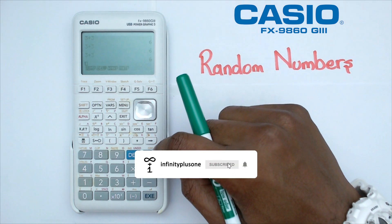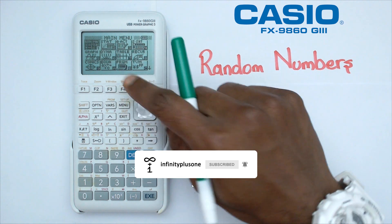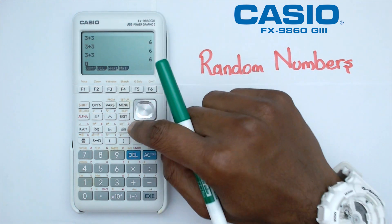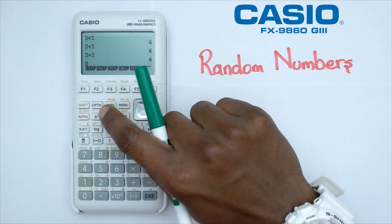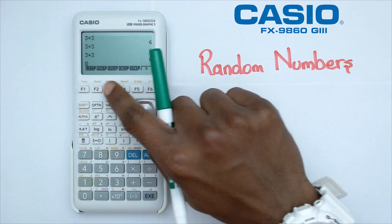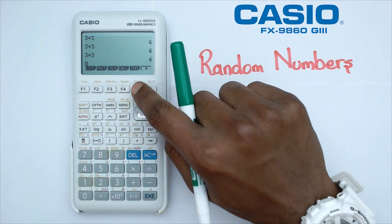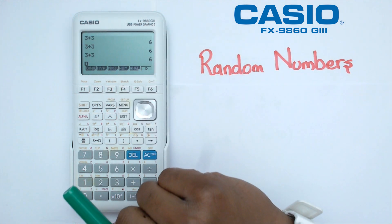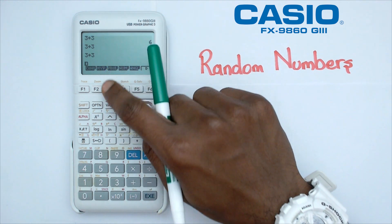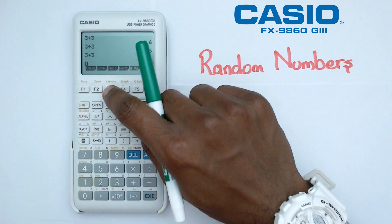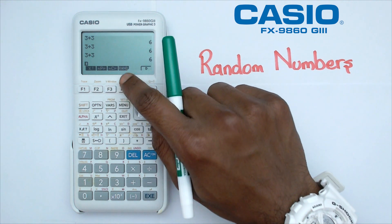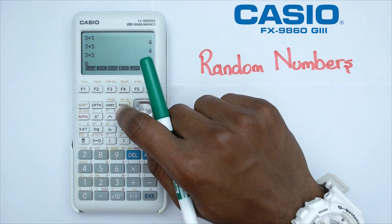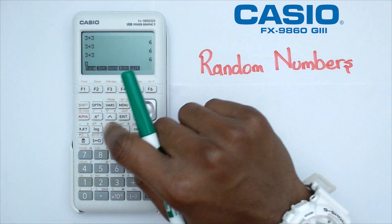We're going to switch on the calculator, go into the menu, and go into the first menu which is the Run menu. In here we need to click on Option. Once you click on Option you're going to get a whole lot of little menus. We're going to click on F6, which takes you to the next set of menus, and in there we've got a menu called Prob which is F3. Click on that.